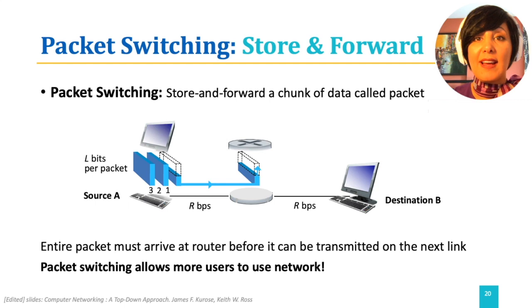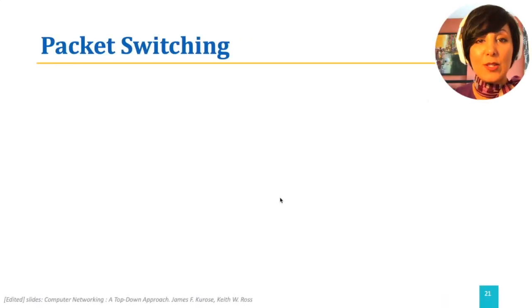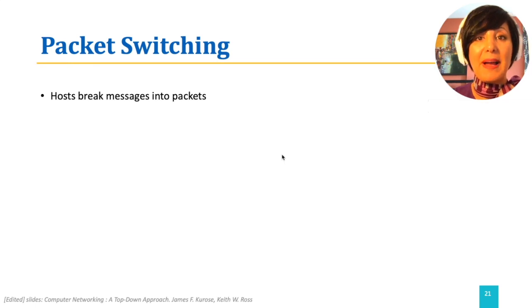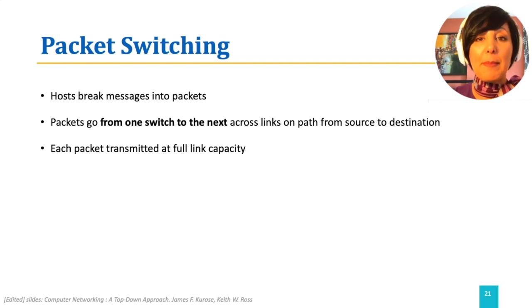Packet switching allows more users to use the network. In packet switching, hosts break messages into packets. Packets go from one switch to the next across links on the path from source to destination. While the packet is being transmitted on a link, for the full duration of transmission, the packet has the full link capacity — not a portion of its time or spectrum.